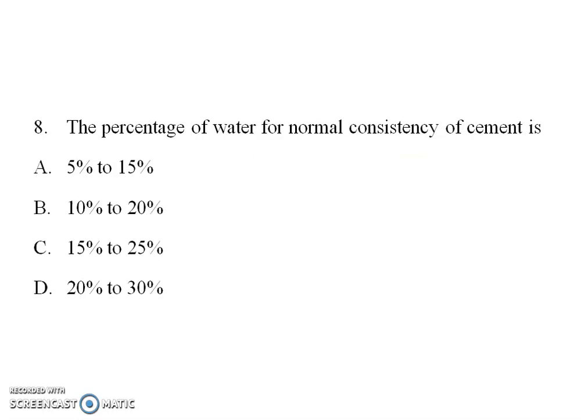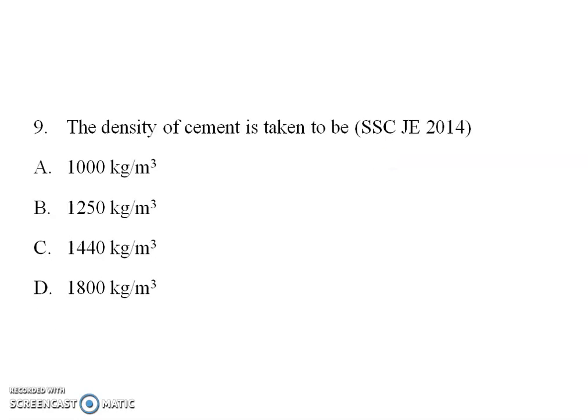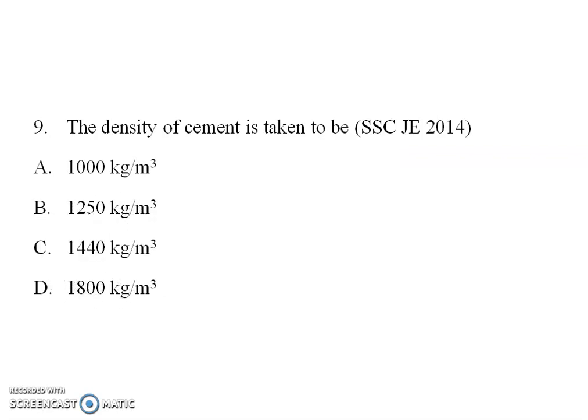Next question: Percentage of water for normal consistency. The normal consistency percentage of water is 20 to 30%. Typically 24% of water is taken. The density of cement is 1440 kg per cubic metre and specific gravity is 3.15.